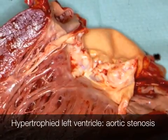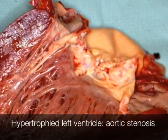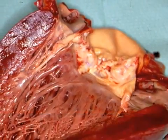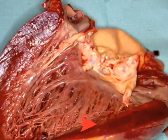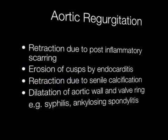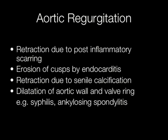Here you can see the left ventricular hypertrophy caused by aortic stenosis. There are a number of causes of aortic regurgitation, including retraction due to post-inflammatory scarring, erosion of cusps by endocarditis, retraction due to senile calcification, and dilatation of the aortic wall and bulging, for example in syphilis and ankylosing spondylitis.